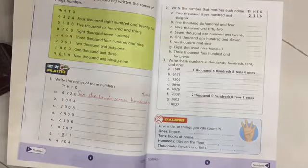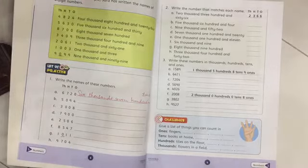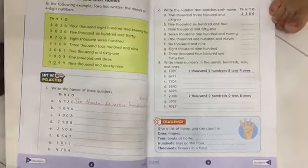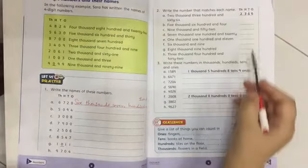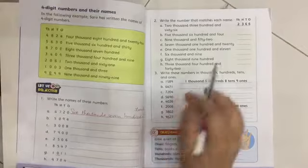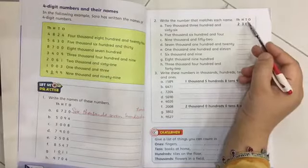Now we are going to go to question number 2. Question number 2. First, write the number that matches each name. Write the number that matches each name. What do you do? 1, 10, 100.